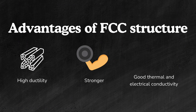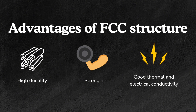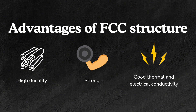The advantages of FCC structure include high ductility — it can deform easily without breaking, making materials more flexible. It can also become stronger under stress without losing formability, and is less prone to breaking under stress, making it safer in high-stress environments. Secondly, it is very strong; the high packing efficiency means 74% of the volume is filled with atoms, leading to stronger and denser materials that are resistant to fracture, suitable for structural applications. Lastly, it has good thermal and electrical conductivity, making it efficient for heat and electricity transfer, ideal for electronics and wiring.